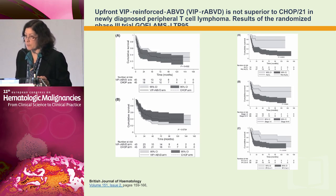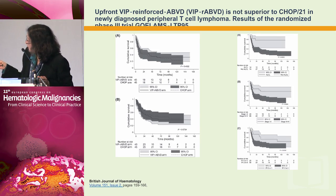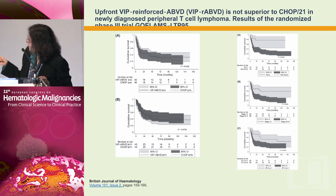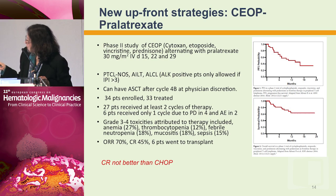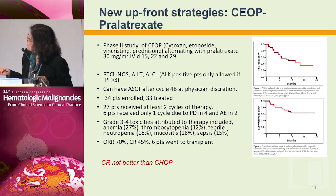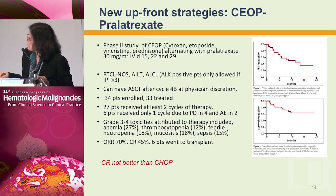What about other frontline regimens? Some studies have been published with non-anthracycline regimens. A French study used VIPD/ABVD and compared it to CHOP-21, showing it really wasn't any better. Another US study used CEOP alternating with pralatrexate — using etoposide without anthracycline — and this study also turned out to be not any better than CHOP alone.